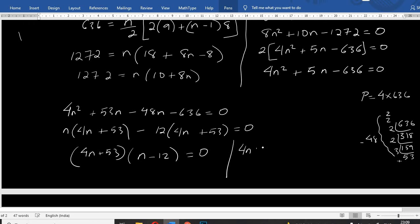4n plus 53 or n equals 12. N equals minus 53 by 4, or N equals 12. Integer, positive, the answer is 12.